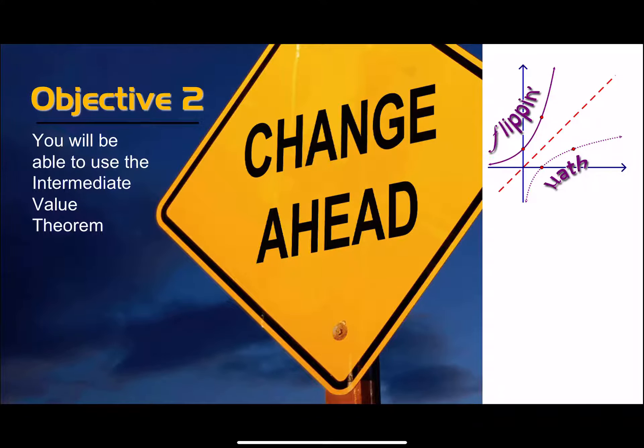For objective 2, you will be able to use the Intermediate Value Theorem. In the picture here, you can see some sort of road sign about there being change ahead. And I chose this picture because you've seen the Intermediate Value Theorem in some form, and it was about sign changes.